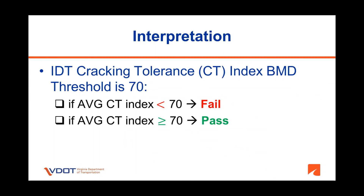Once we calculate the CT index, we would compare the average CT index value of the asphalt mixture to the CT index threshold value of 70, the VDOT-BMD spec requirement. If the average CT index is less than 70, the mixture is crack susceptible and fails to meet VDOT-BMD spec criteria. If the average CT index is 70 or more, the mixture is crack resistant and passes. It is very important to note that the threshold of 70 is for field mix lab compacted specimens after reheating. Initial analysis of test data from VTRC studies indicate that results from lab mix lab compacted specimens are comparable to those from field mix lab compacted specimens after reheating.